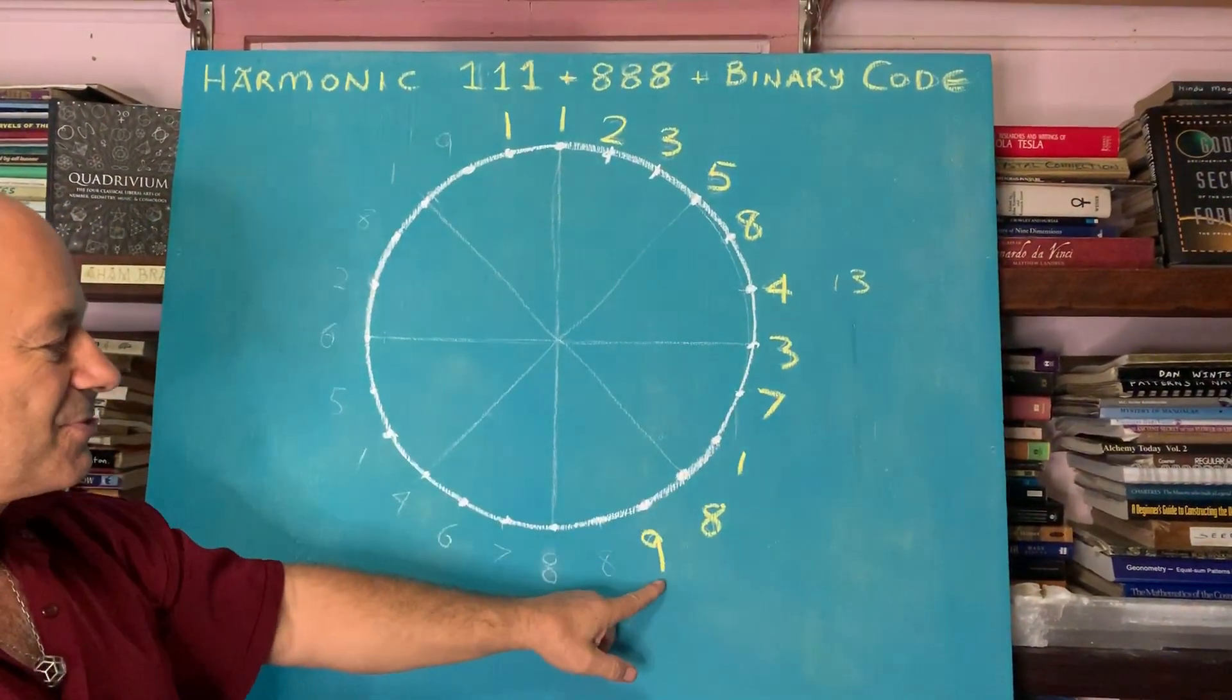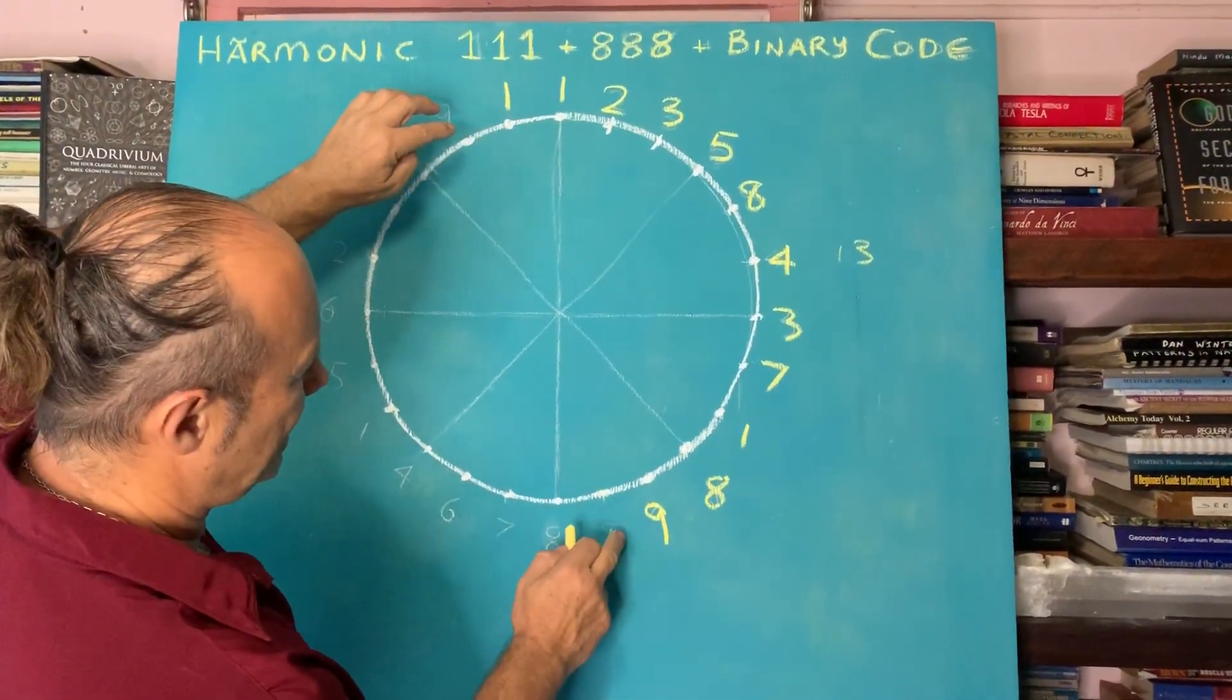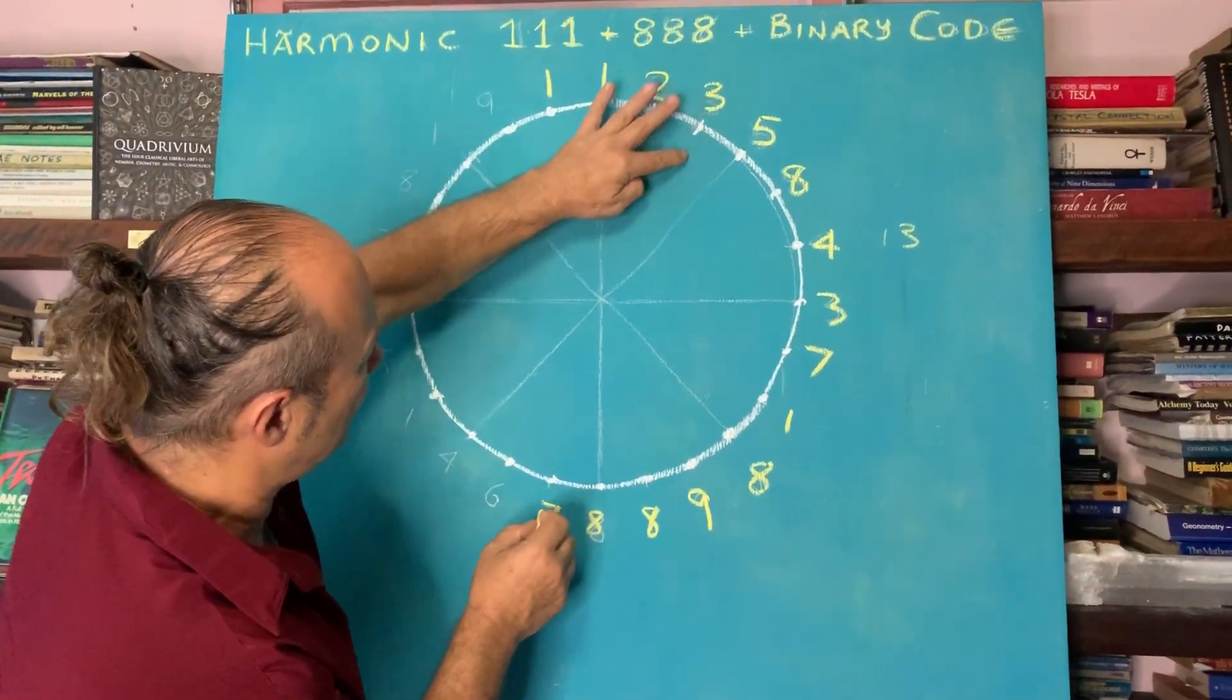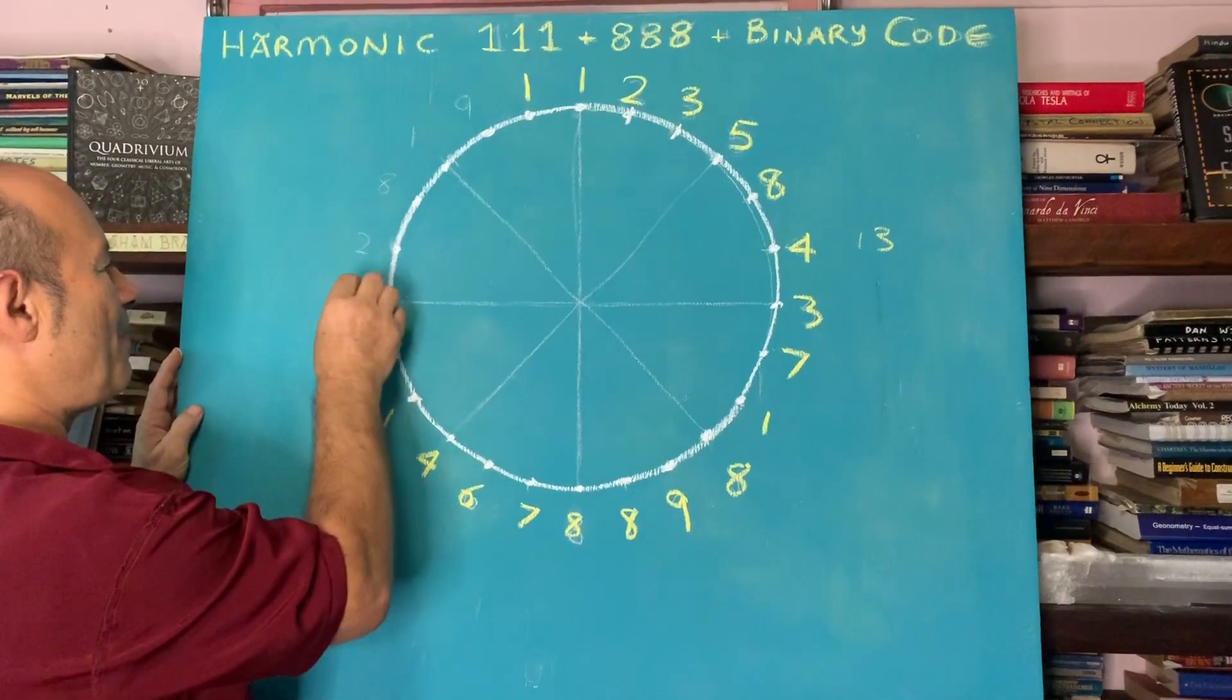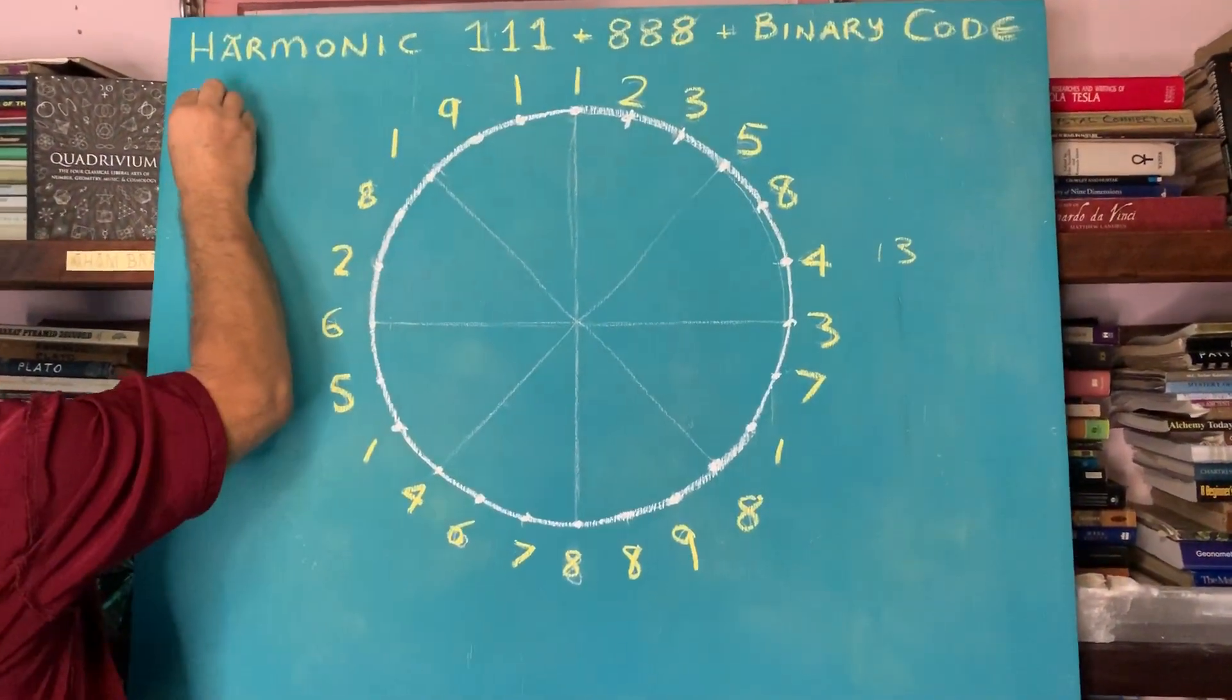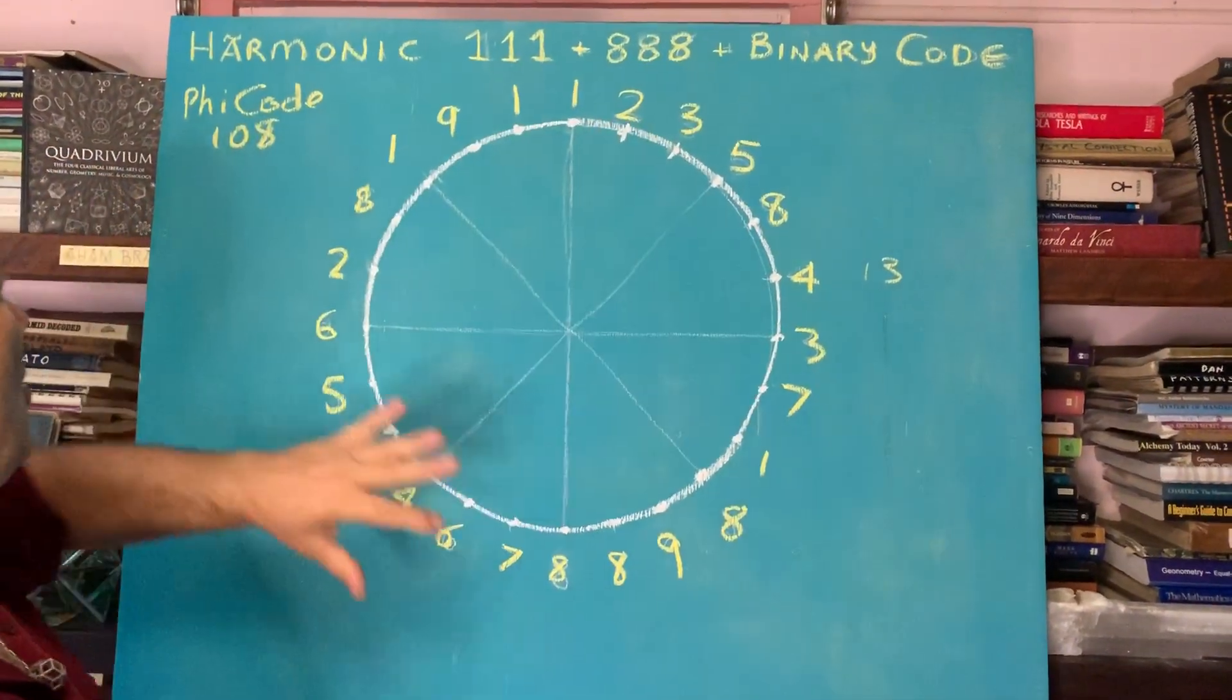I've got the first 12 Fibonacci digits reduced to single digits, and all the pairs add up to nine now. So what we have is 12 nines. If you were to calculate 12 nines, it's 108. So it's called the Phi Code. Phi Code 10849 is what I call this infinitely repeating 24 pattern.